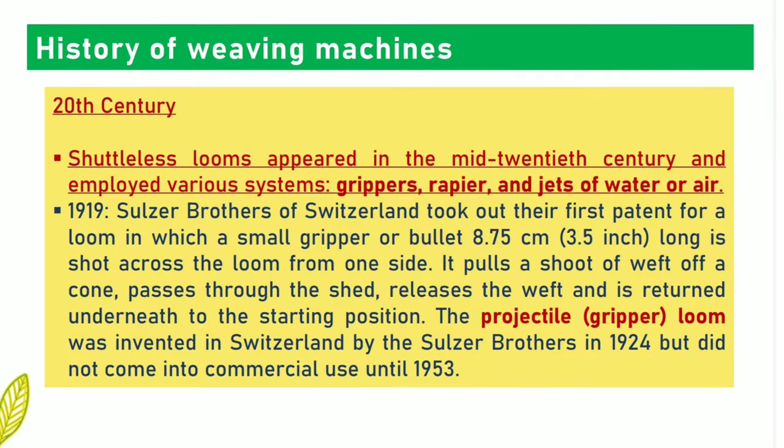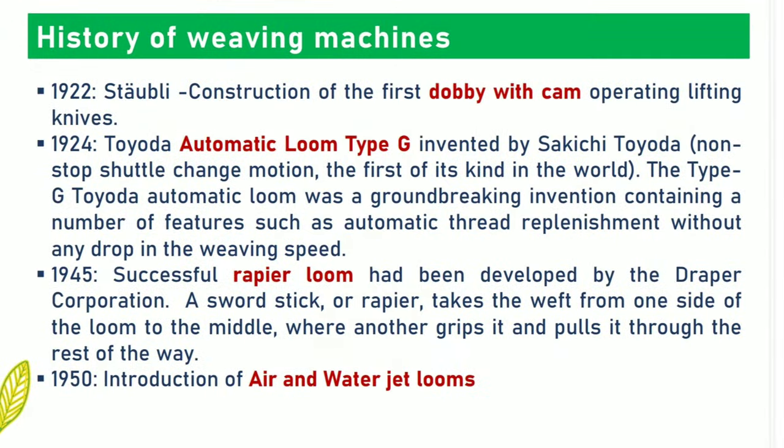Now coming to the 20th century: shuttleless looms appeared in the mid-20th century and employed various systems — grippers, rapier, and jets of water or air. In 1922, construction of the first dobby with cam-operating lifting knives was done by Stäubli. In 1924, the Toyota automatic loom type G was invented by Sakichi Toyota. In 1950, it was the introduction period of air jet and water jet looms.